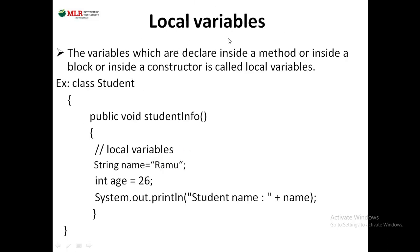Coming to local variables: the variables which are declared inside a method, inside a block, or inside a constructor are called local variables. For example, in a Student class with a method studentInfo, if you declare a String name or int age equals to 26 inside that method, those are local variables.